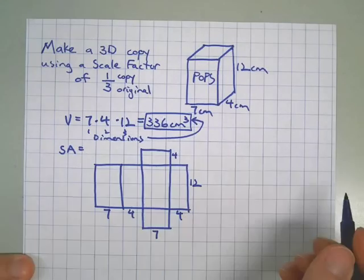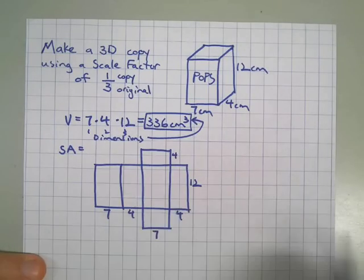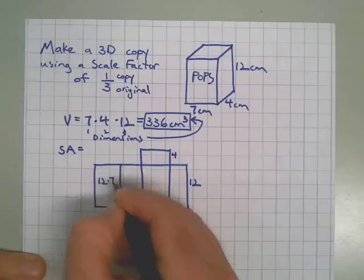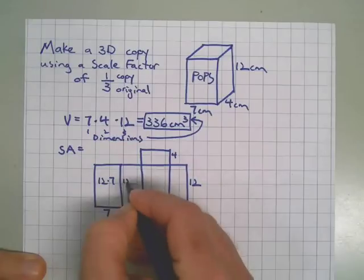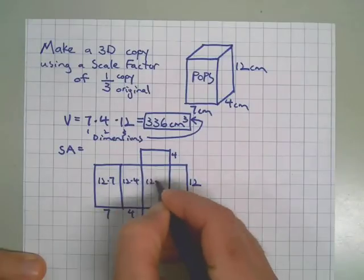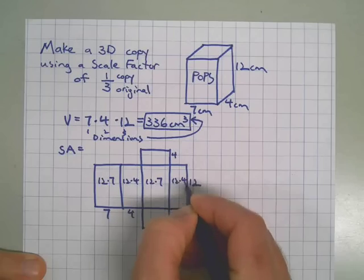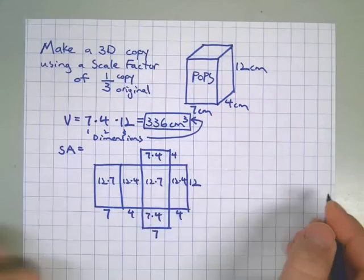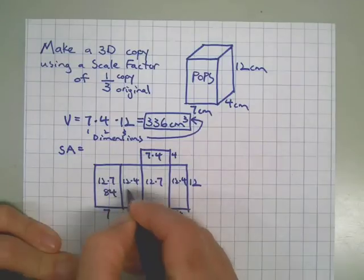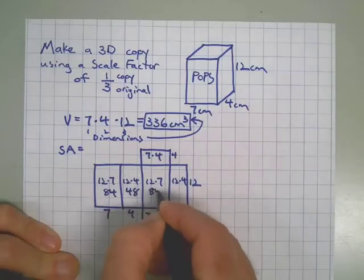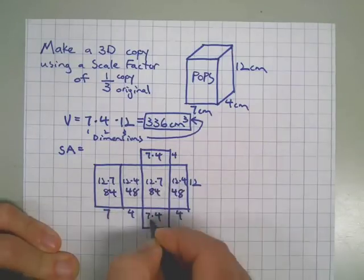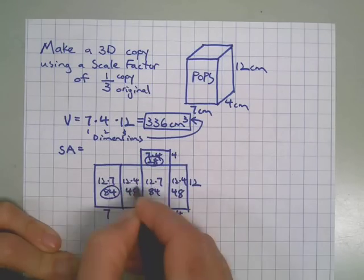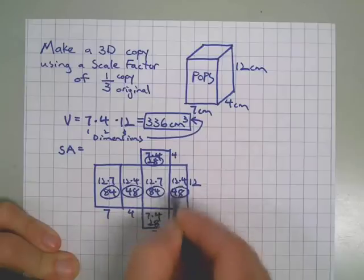We'd have a width of 7. The congruent side around the back would also be 7. Here's a 4, here's a 4. So within each box here, within each rectangle of the net, we can do the area: 12 times 7, 12 times 4, 12 times 7, 12 times 4. And the bases will both be 7 times 4. So we've got 84, 48, 84, 48, 28, 28. I'm going to circle those so I don't accidentally write something else down.